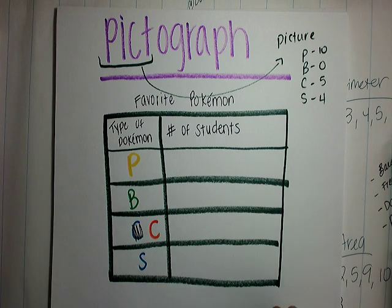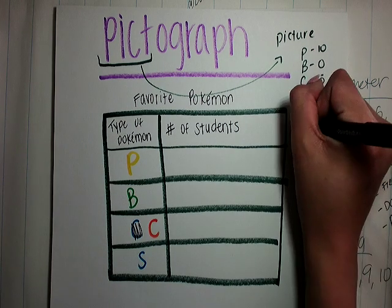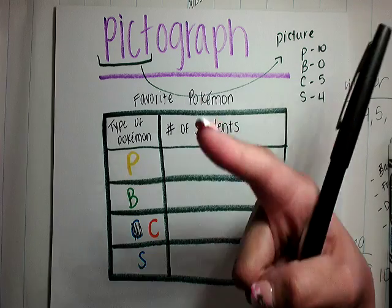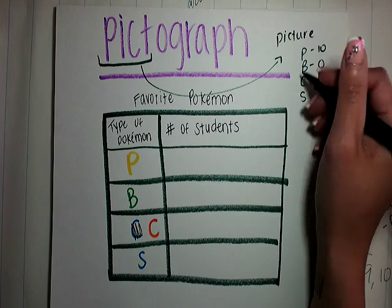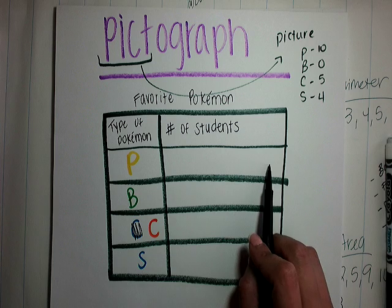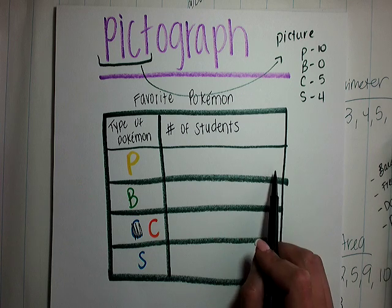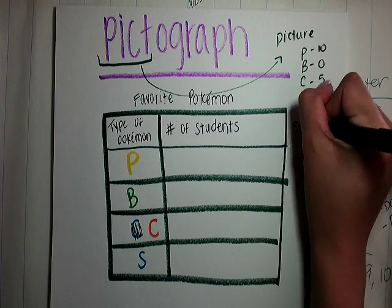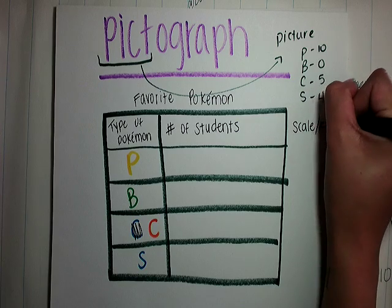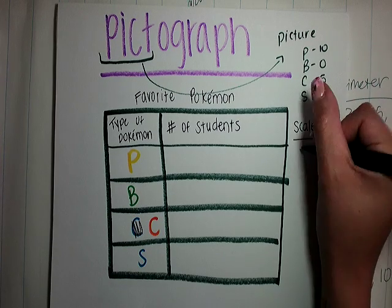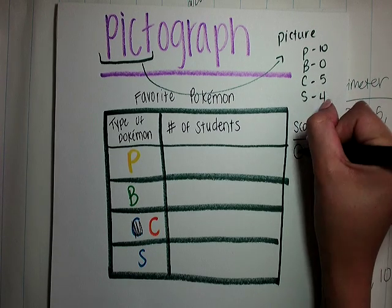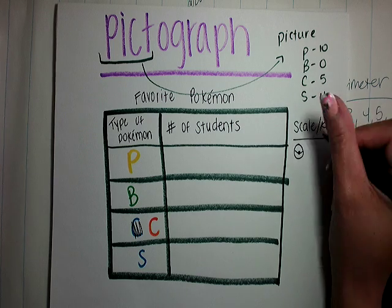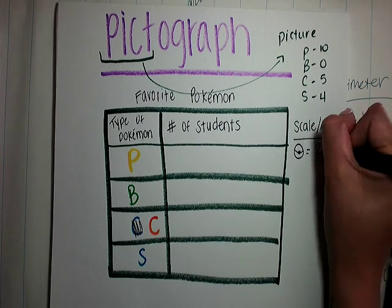It would make sense to draw a Pokeball since we're talking about Pokemon. Just like with the dot plot, we had to decide one dot equals how many — same idea here. I don't want to draw ten pictures of something, that's going to take up way too much space. So I want to make a scale or a key. I'll draw a Pokeball, and this is going to equal two students.